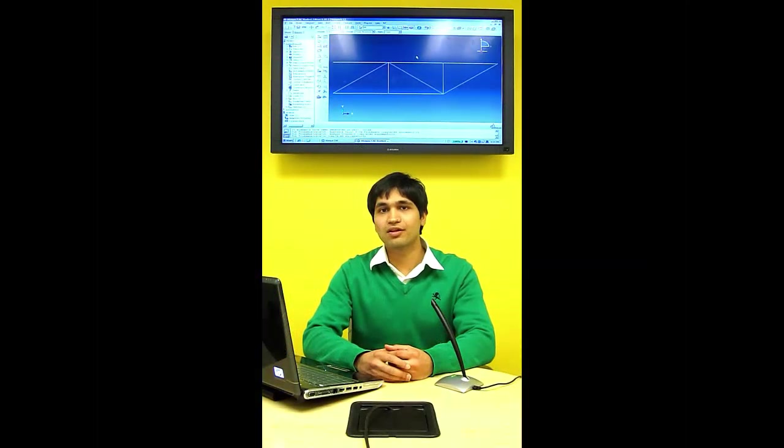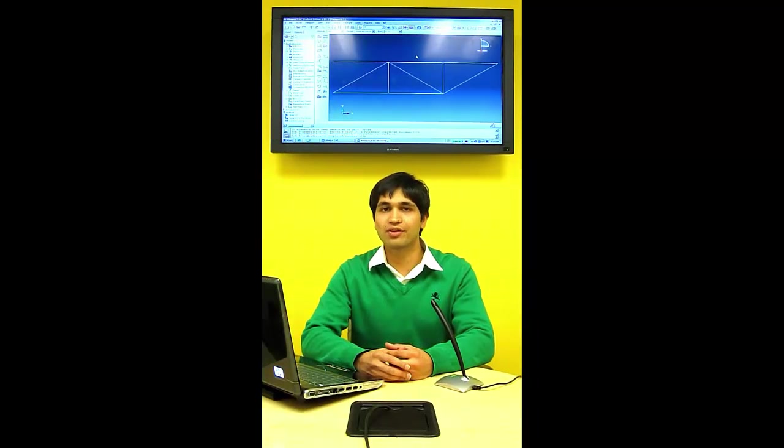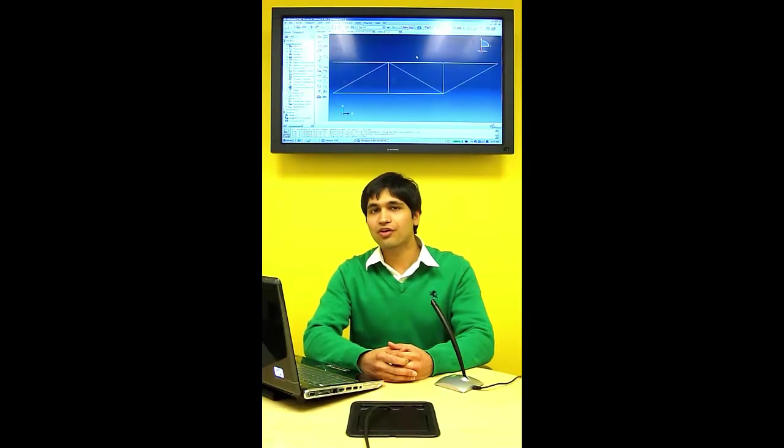The truss in this example is a two-dimensional truss, so we're going to be working in a 2D plane. This means we're not going to create a 3D model of the truss the way we created a 3D model of the barbell stand. Instead, the truss members are going to be modeled using line segments.